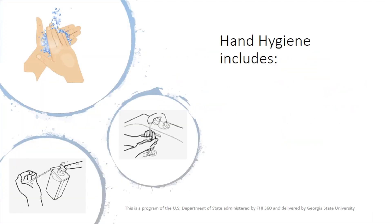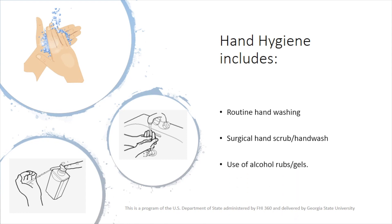So our target when we wash our hands or hand rub is to eliminate the transient flora. Hand hygiene includes routine hand washing, surgical hand scrub or hand washing, and use of alcohol rubs or gels.